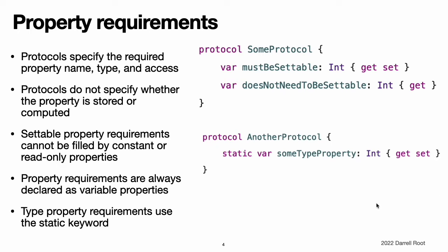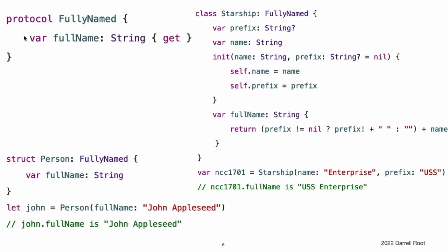Gettable and settable properties are indicated by writing get and set after their type declaration, and gettable properties are indicated by writing get inside curly braces. Always prefix type property requirements with the static keyword when you define them in a protocol. This rule pertains even though type property requirements can be prefixed with the class or static keyword when implemented by a class. Here is an example of a protocol with a single instance property requirement. The fully named protocol requires a conforming type to provide a fully qualified name.